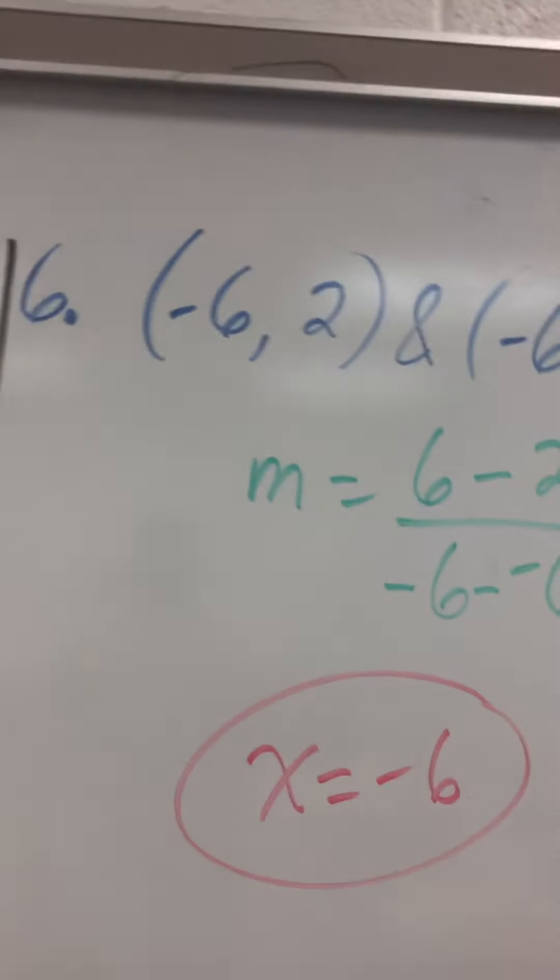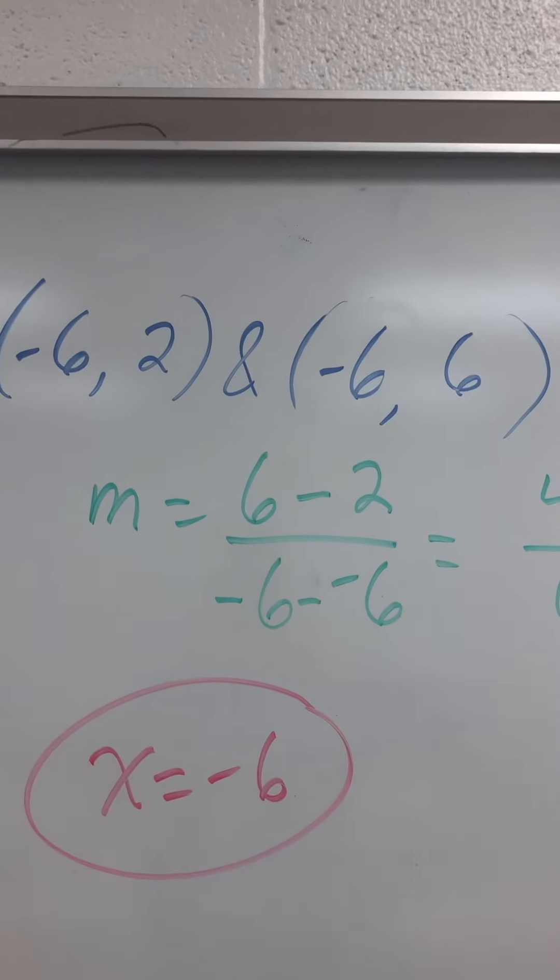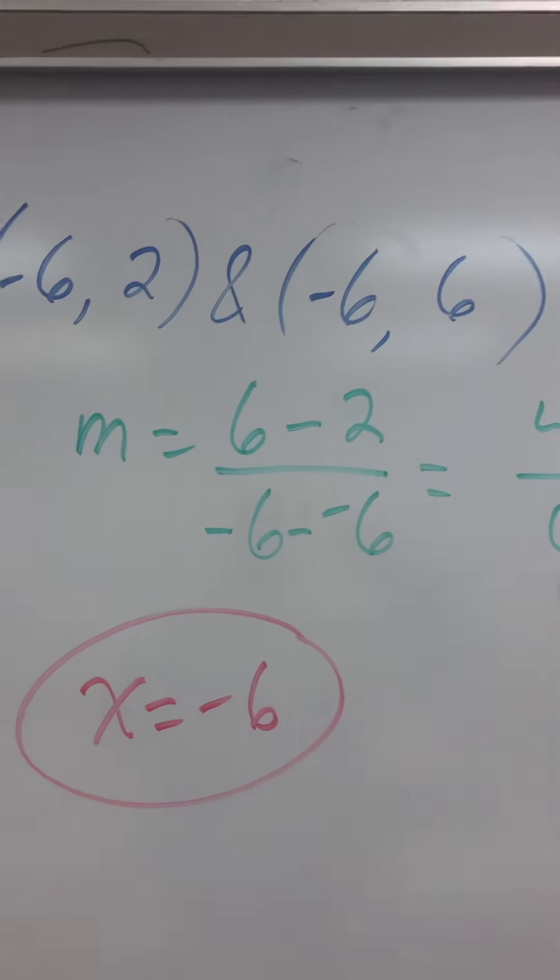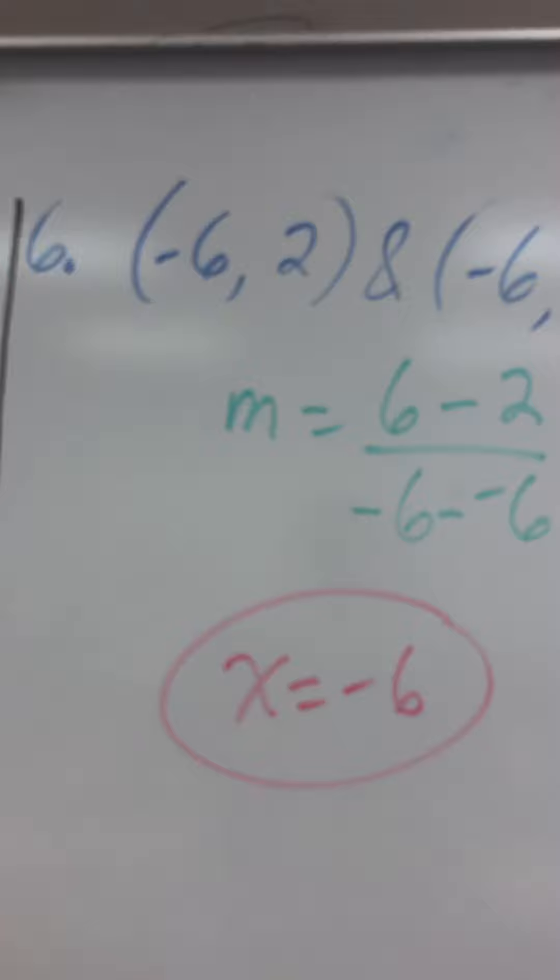Same thing happens if x is the same number. If x is the same number, you get an undefined slope. But still, once x is the same, that's your answer. x equals negative 6.